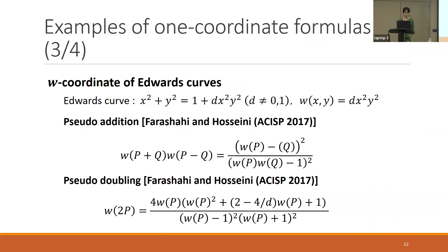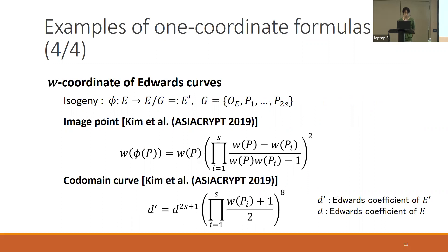The second basic coordinate is the w-coordinate of Edwards curve. The w-coordinate is defined by dx²y². Here d is the coefficient of Edwards curve, called the Edwards coefficient. Similarly, by using the w-coordinate, we can compute the ladder addition: the w-coordinate of P plus Q from w-coordinates of P, Q, and P minus Q. We can also compute the w-coordinate of 2P from w(P) and Edwards coefficient d. There is also a formula for the w-coordinate of the quotient curve E/G computed from w-coordinates of kernel points.